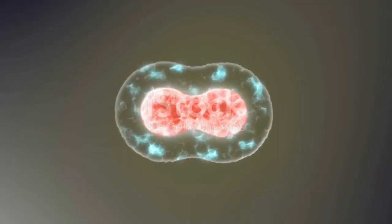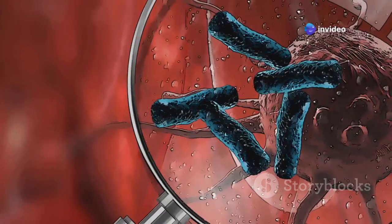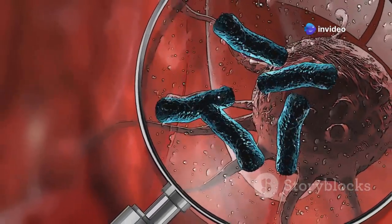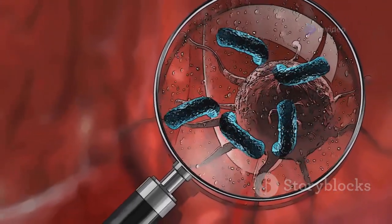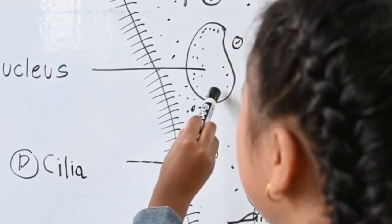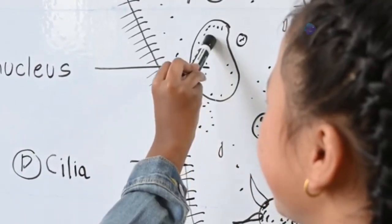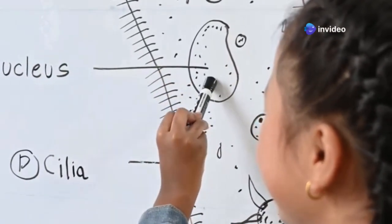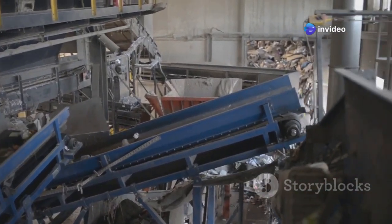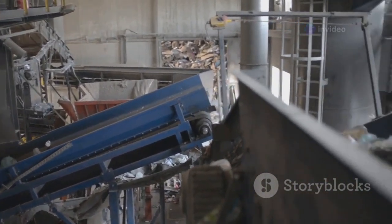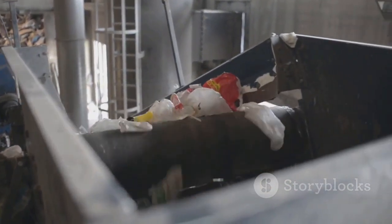Now let's talk about lysosomes, the recycling centers of the cell. These membrane-bound organelles are filled with digestive enzymes that break down waste materials and cellular debris. Think of them like tiny garbage disposals, grinding up old organelles, worn-out proteins, and other cellular junk. Lysosomes help keep the cell tidy and efficient by breaking down unwanted materials into their building blocks, which can then be reused to build new molecules.